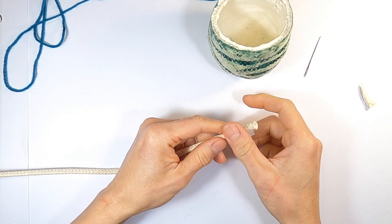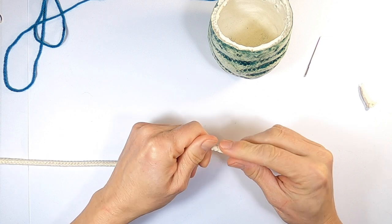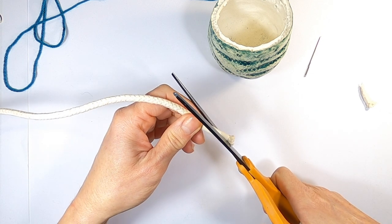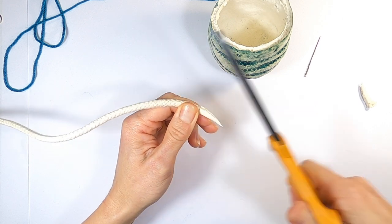Using the same sash cord, stick some masking tape around the end. This will stop the cord from fraying. Cut the cord on a diagonal so that it tapers to a point. This means it will lay flat in the lip of the pot.